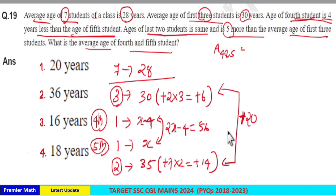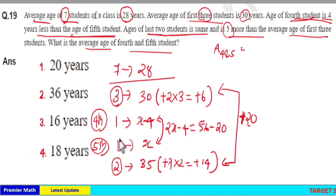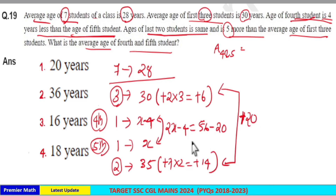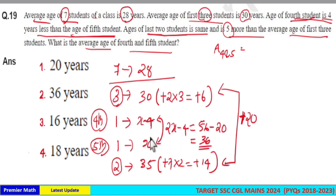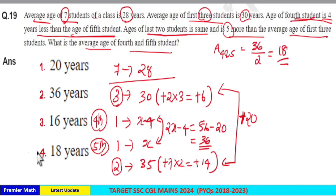There is a plus 20 increment, so we subtract this 20 from the sum of ages of the remaining 2 students. We consider these 2 students' ages as 28 plus 28, which is 56, and subtract the 20 increment from 56. This gives 36 as the sum of ages of the 4th and 5th students. Therefore, the average of the 4th and 5th students is 36 divided by 2, which equals 18. Option 4 is your answer.